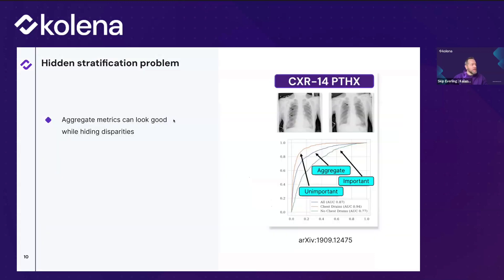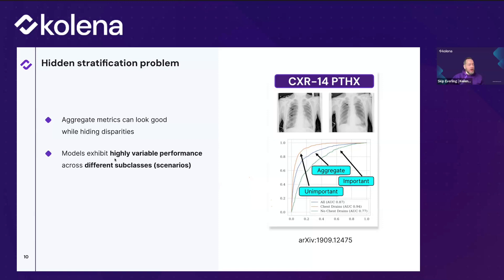This relates to the hidden stratification problem, defined in an academic paper on chest X-ray medical images. The main idea is that aggregate metrics can look good but hide disparities — models exhibit highly variable performance across different subclasses. In the example shown, an important subclass represented by the green line is performing worse than the aggregate, and that's hidden unless you break things down. Discovering that only through a real-world failure could be disastrous.